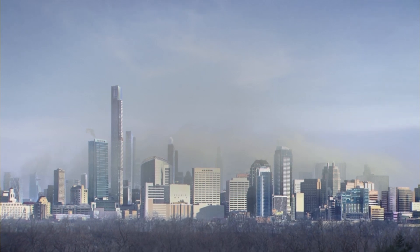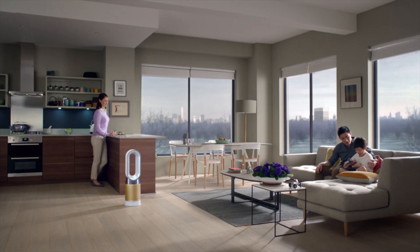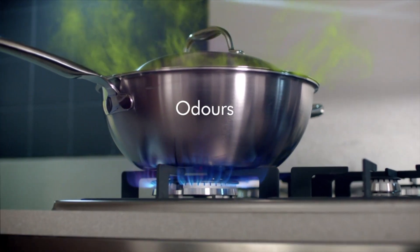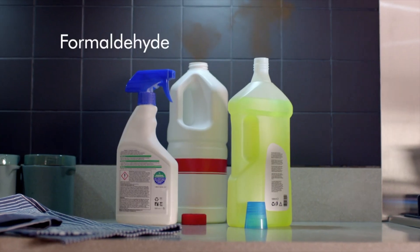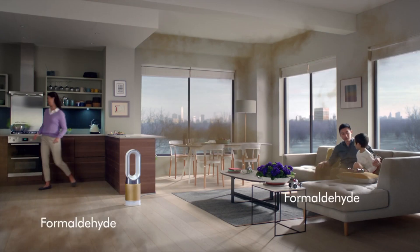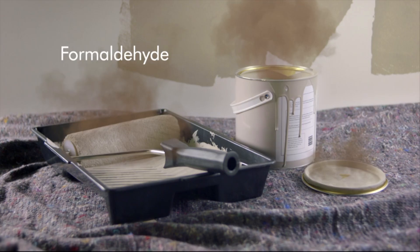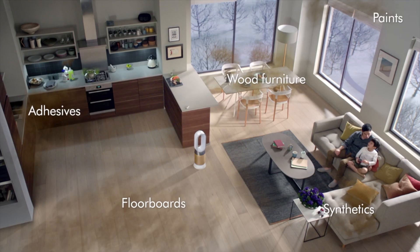Pollution outdoors is well documented, but not indoors where it can be even worse. Fumes like these, particularly formaldehyde, can build up in the home, emitted by numerous sources, especially paints and building materials. Formaldehyde sources can pollute continuously at varying rates.